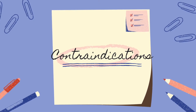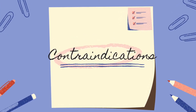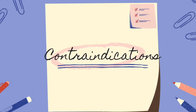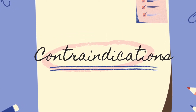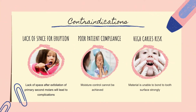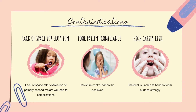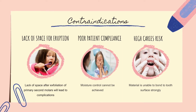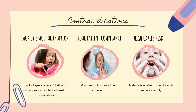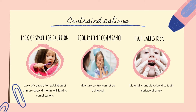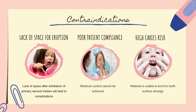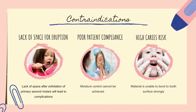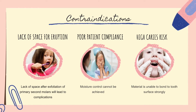I'm Farhana and I will explain the contraindications of using GFRCR as a space maintainer. The first contraindication is lack of space for tooth eruption. When there is minimal or insufficient space after exfoliation of primary second molars, the usage of GFRCR would only lead to complications or even impede the eruption of the first permanent molar, giving rise to mesial migration or reduction in arch length.